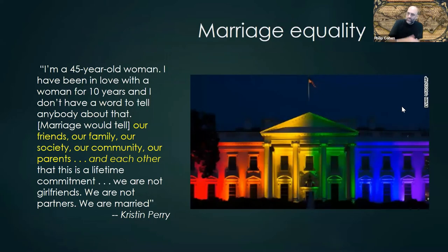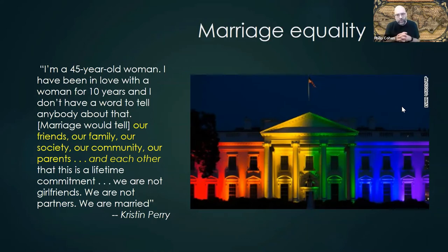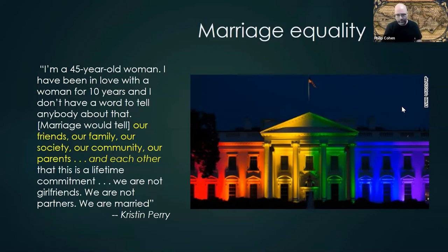The big story in terms of access to family structure has been marriage equality. I really like this quote when we talk about families in their institutional context: 'I'm a 45-year-old woman. I've been in love with a woman for 10 years. I don't have a word to tell anybody about that — our friends, our family, our society, our community, our parents, and each other.' I love that the formal institutional designation of marriage, even in the most intimate way, gives a couple a language to speak to each other. It's a great way to talk about state and society interaction — who gets to get married is a great story of power and inequality.